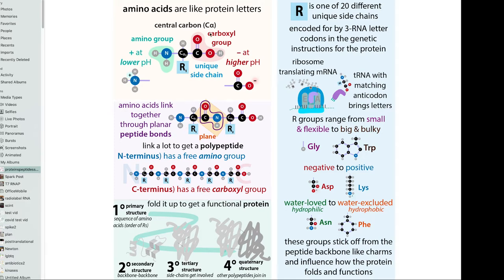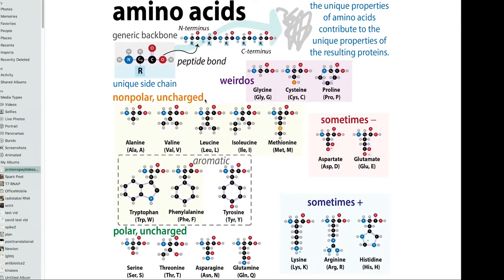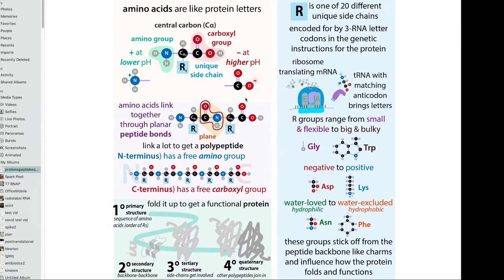This amino group and this carboxyl group are going to allow these amino acids to link together. The unique part of the amino acid hangs off of the side chain - the R group. We call it a side chain or an R group. It's one of 20 different unique amino acids, and they all have different properties like different size and charge that will influence how the protein wants to fold.